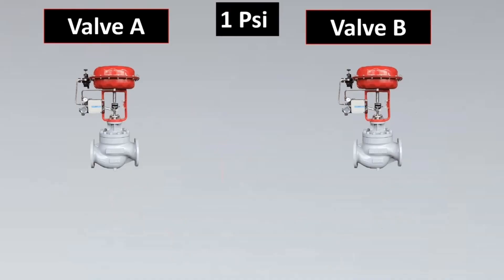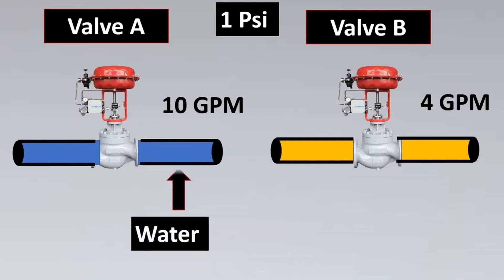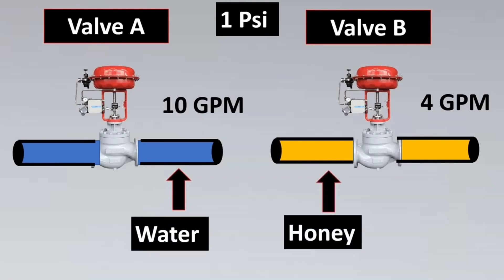Now I'll measure the flow between the two valves. I see the flow between the first valve was 10 GPM and the second valve was 4 GPM. Why? There could be the case that for the first valve the fluid was water, and for the other valve the fluid was honey.